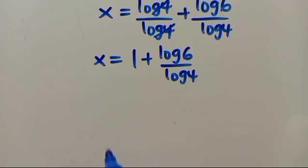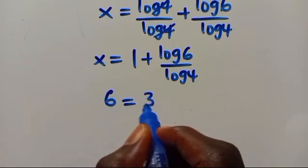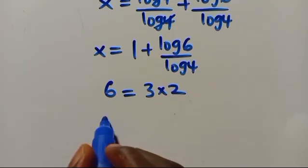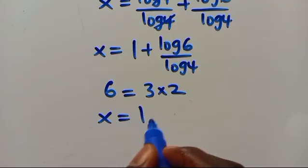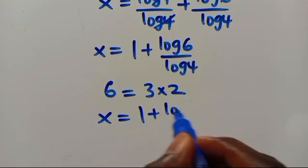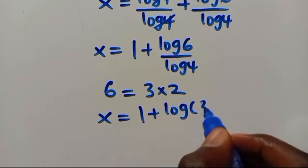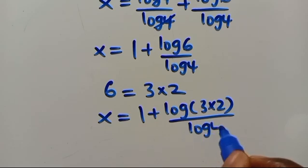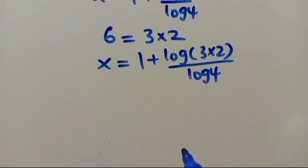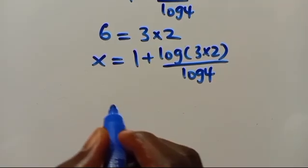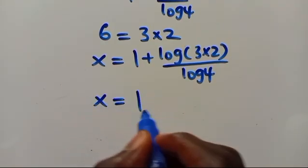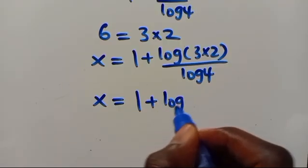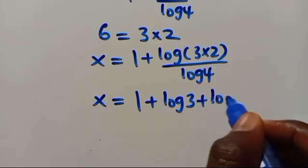Let us also recall we can write 6 as the product of 3 times 2. So we have x equals 1 plus log(3 times 2) over log 4.